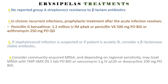No reported group A streptococci resistance to beta-lactam antibiotics. In chronic recurrent infections, prophylactic treatment after the acute infection resolves: penicillin G-benzathine 1.2 million units IM every 4 weeks, or penicillin VK 500 mg PO BID, or azithromycin 250 mg PO daily. If staphylococcal infection is suspected or if patient is acutely ill, consider a beta-lactamase-stable antibiotic. Consider community-acquired MRSA and, depending on regional sensitivity, may treat MRSA with TMP-SMX DS 1 tab PO BID, or vancomycin 1g IV every 12 hours, or doxycycline 100 mg PO BID.